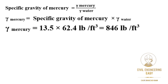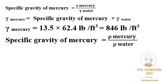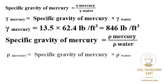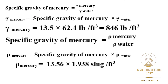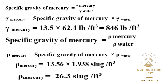To find the density of mercury, the specific gravity of mercury equals the density of mercury divided by the density of water. Rearranging, the density of mercury equals the specific gravity of mercury multiplied by the density of water. Putting in the values: 13.56 multiplied by 1.938 slugs per cubic feet gives us the density of mercury equal to 26.3 slugs per cubic feet.